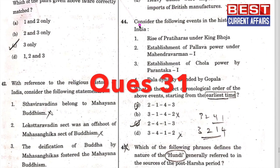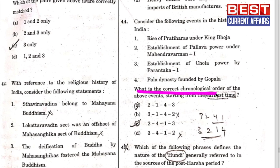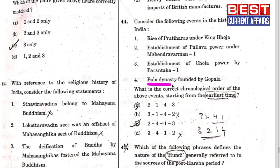This question is related to Indian history. Consider the following events in the history of India and find the correct chronological order starting from the earliest times: Rise of Pratihars under King Bhoj; Establishment of Pallava power under Mahindri Varuman I; Establishment of Chola power by Prantaka I; and the Pal dynasty founded by Gopal.